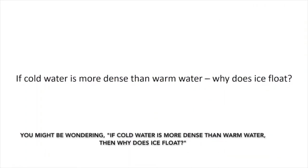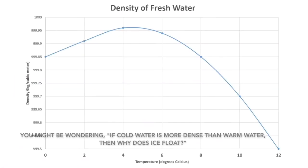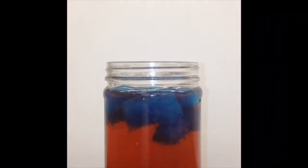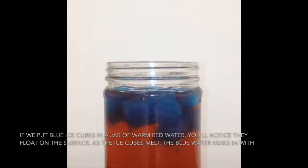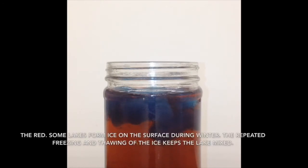You might be wondering: if cold water is more dense than warm, then why does ice float? That's because water is most dense at 4 degrees Celsius and just slightly less dense at zero, where ice forms. If we put blue ice cubes in a jar of warm red water, you'll notice they float on the surface. As the ice cubes melt, the blue water mixes in with the red.